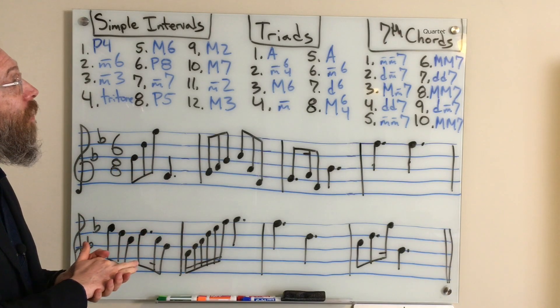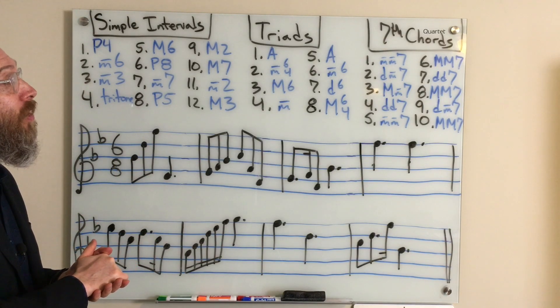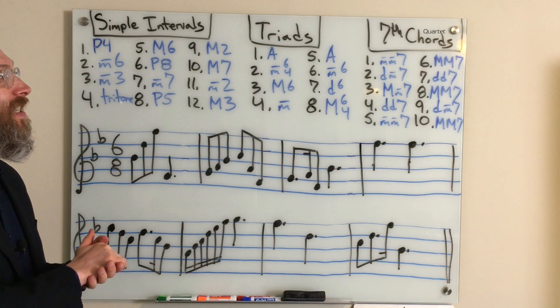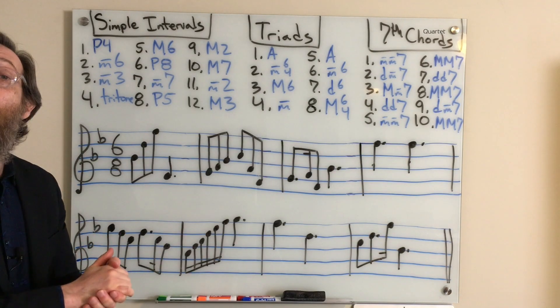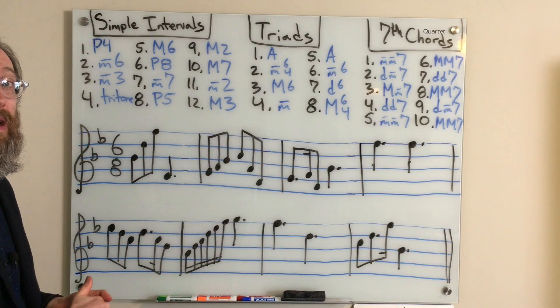Number 5 was another augmented triad. Number 6 was a minor triad in 1st inversion. 7 a diminished triad in 1st inversion. And 8 a major triad in 2nd inversion.